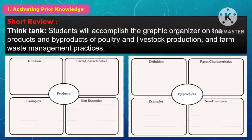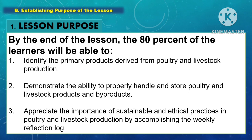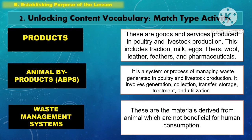In activating prior knowledge, for the short review, the students will accomplish a graphic organizer on the products and byproducts of poultry and livestock production and farm waste practices. In establishing the purpose of the lesson, for unlocking of content vocabulary, the students will answer a match type activity.